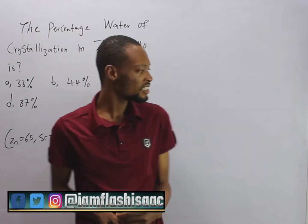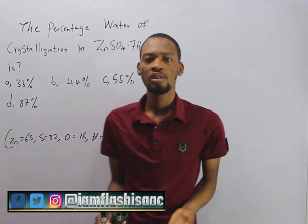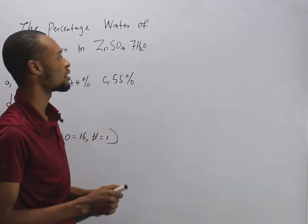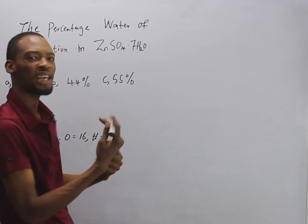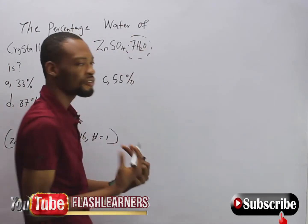Water of crystallization is simply the water that is present in the crystalline structure of a compound or salt. Taking a look at this compound, the water of crystallization is simply this: 7H₂O.